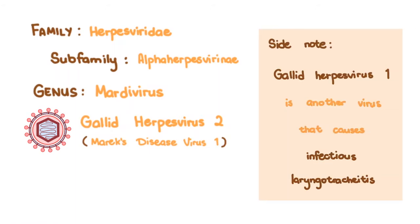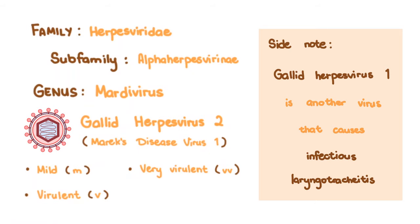As a side note, Gallid herpesvirus 1 is another virus that causes infectious laryngotrachitis. All virulent strains of Marek's disease are divided into pathotypes, which are mild, virulent, very virulent, and very virulent plus.